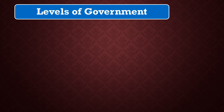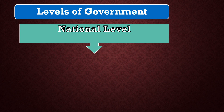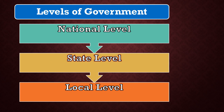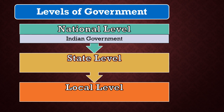Another important topic is the levels of government. In India, there are three main types and forms of government. The first is the national level, then the state level, and then the local level. At the national level, for India we have the Indian government — the government at the national level is called the national government, or the central government, or the union government. At the state level, the government is called state government — like UP government, Delhi government, Bihar government, or MP government.